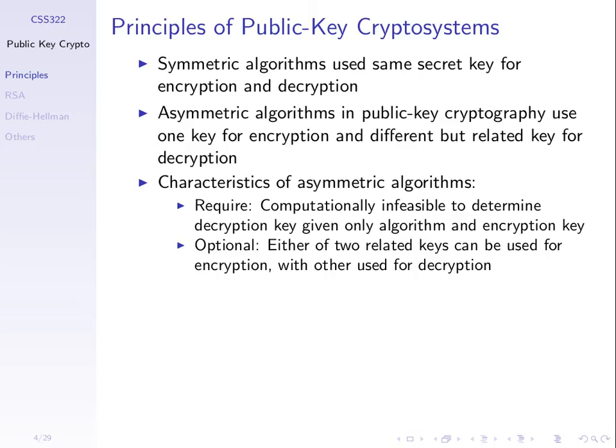So the principles: symmetric algorithms use the same secret key for both encryption and decryption. Asymmetric algorithms — another name for public key cryptography algorithms — use one key for encryption and a different but somehow related key for decryption. Two different keys, not random, but related in some way. Usually asymmetric algorithms require that it's computationally infeasible — practically impossible — if you know the algorithm and one of the keys, to find the other key.